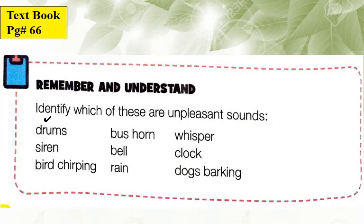There's an activity on your textbook page number 66 — Remember and Understand. Identify which of these are unpleasant sounds. Read them out and identify which things produce an unpleasant sound. Read the words and put a tick mark on the ones you think produce an unpleasant sound. This question is your homework — do it yourself.